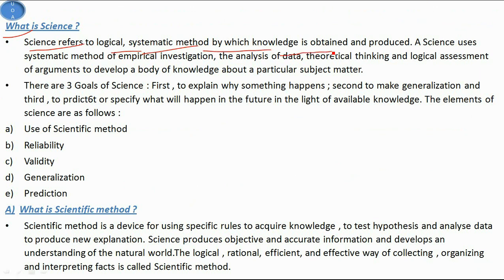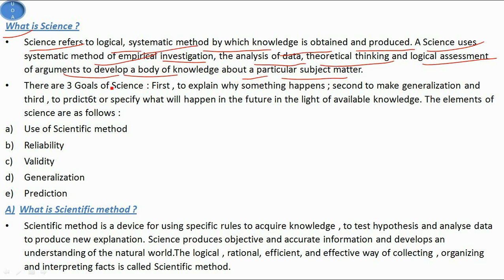So what is science? Basically, science refers to a logical, systematic method by which knowledge is obtained and produced. A science uses systematic methods of empirical investigation, analysis of data, theoretical thinking, and logical assessment of arguments to develop a body of knowledge about a particular subject matter. There are three goals of science: first, to explain why something happens; second, to make generalizations; and third, to predict what will happen in the future in light of available knowledge.